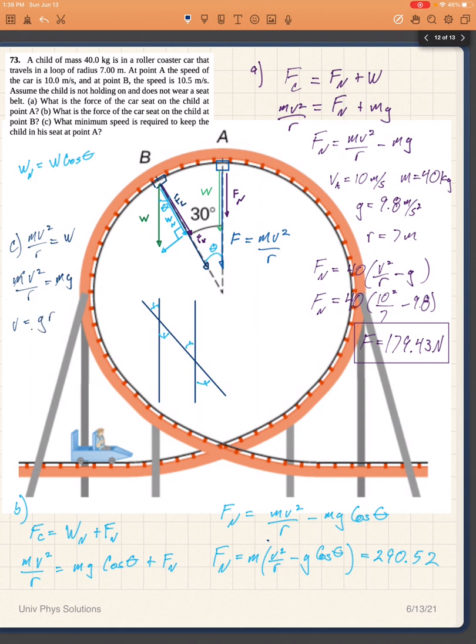The square root of gr, which in this case would be 9.8 times 7, which is 68.6. And then I take the square root of that, which will be 8.28 meters per second.